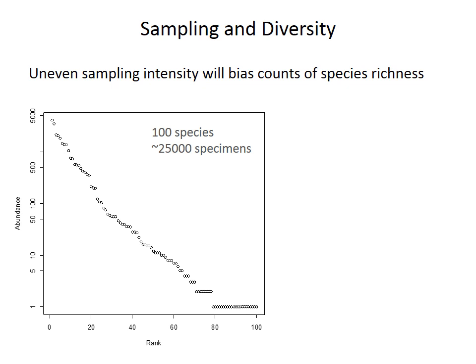The next problem to consider is how we quantify species diversity or species richness — the number of species present at a site. The major problem is that uneven sampling intensity, or collecting different numbers of specimens from different sites, will bias our counts of species richness. We will not get an accurate value because we sampled a different number of specimens.